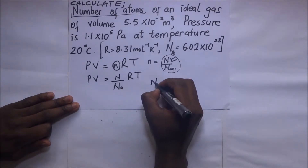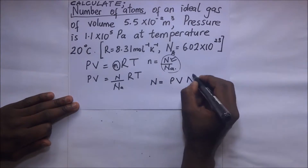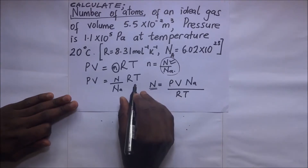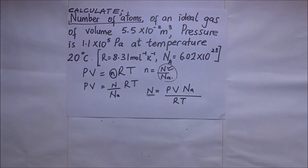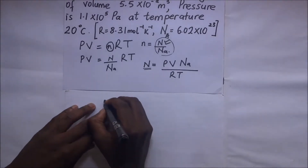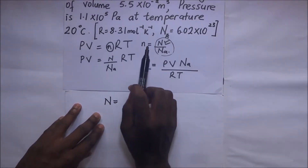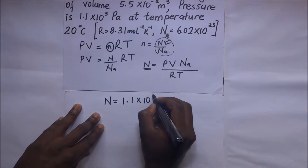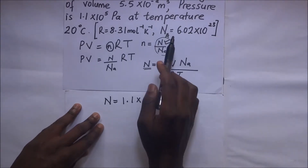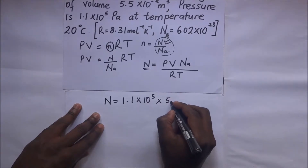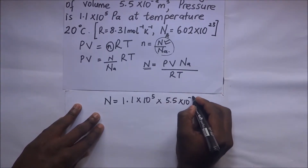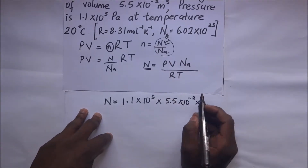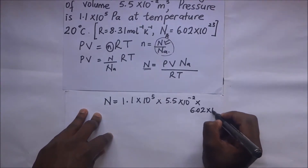Making N the subject of the formula gives N = PV × N_A / RT. We substitute the values: pressure P = 1.1 × 10⁵ Pa, volume V = 5.5 × 10⁻² m³, Avogadro's constant N_A = 6.02 × 10²³, divided by R = 8.31 and the absolute temperature T.